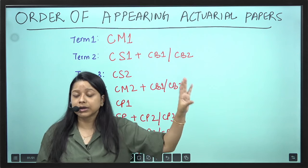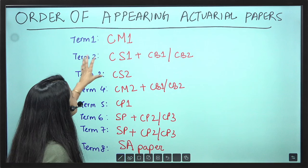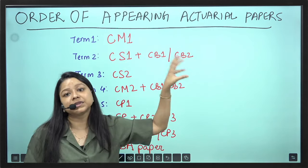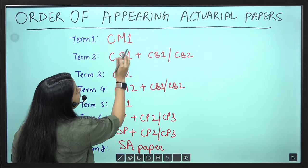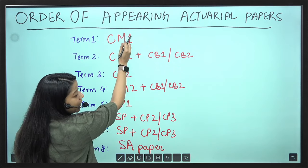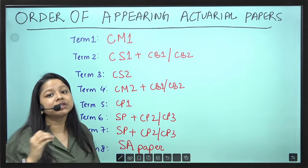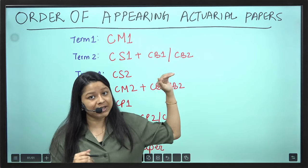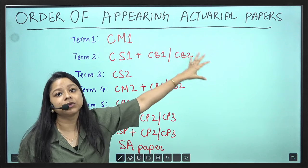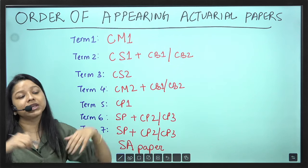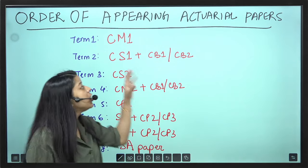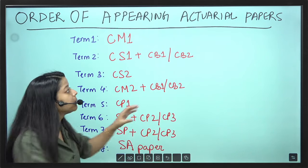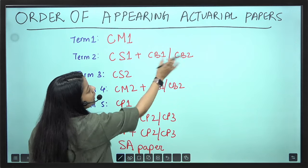Next is your CS1. Next term you will appear for CS1 plus definitely CB1 or CB2, because if you see CS1, the syllabus is comparatively shorter compared to CM1 and also needs less time than that taken for CM1. You can easily sit for CB1 or CB2 along with CS1. Even if you have like 4 and a half months for your time, you can easily apply for CS1 along with CB1 or CB2. Definitely you should club CS1 paper with any of these.